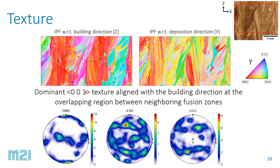The reason why we have this strong, dominant ⟨100⟩ texture is because ⟨100⟩ is the easy growth direction for cubic materials, and specifically for austenite, which is a face-centered cubic material. Additionally, because we have very large grains in the overlapping region, this actually dominates the overall texture of the part. This is what you see in the pole figures — because of these very large grains in this particular region, they skew and dominate the overall texture of the part.